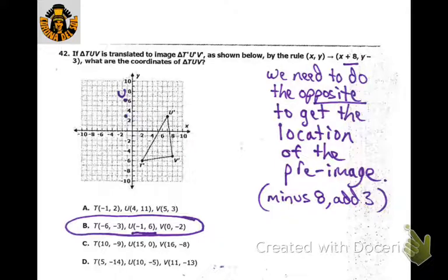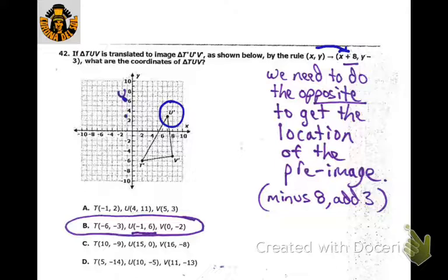This one is a decent challenge — we're trying to figure out what the original preimage is. We have the image and we're trying to find the preimage. They used the rule x plus 8 and y minus 3, so we work backwards: instead of adding 8, subtract 8, and instead of going down 3, go up 3. Focusing on U prime — go left 8, then up 3 — that puts you at the original U. The coordinates are negative 1 comma 6. You could do all three coordinates to verify.